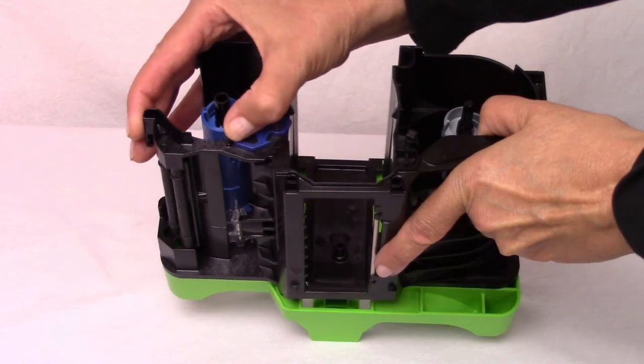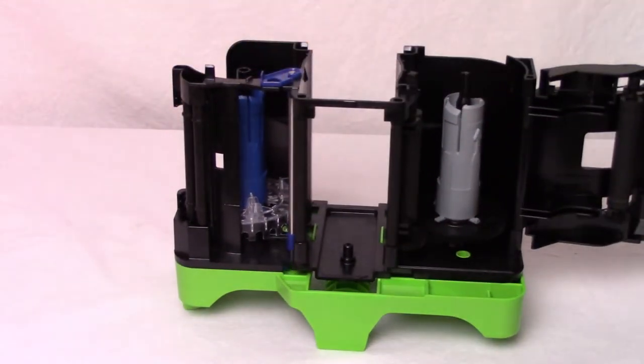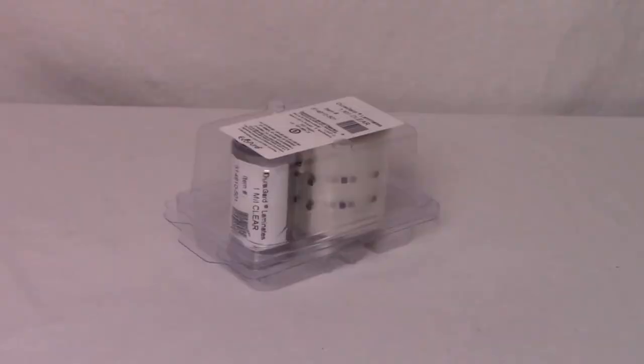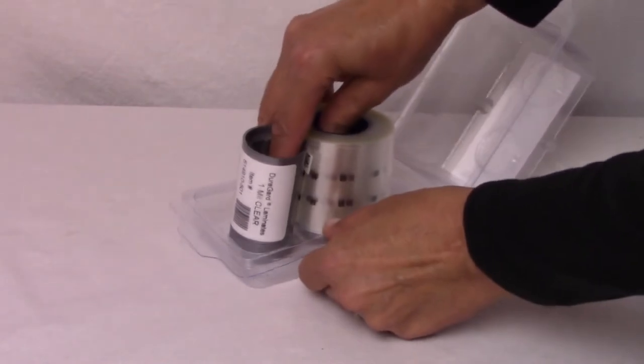Push the release latch and open the gate on the laminator cartridge. Remove the new overlay material from its package. Load the new roll of overlay material onto the cartridge.